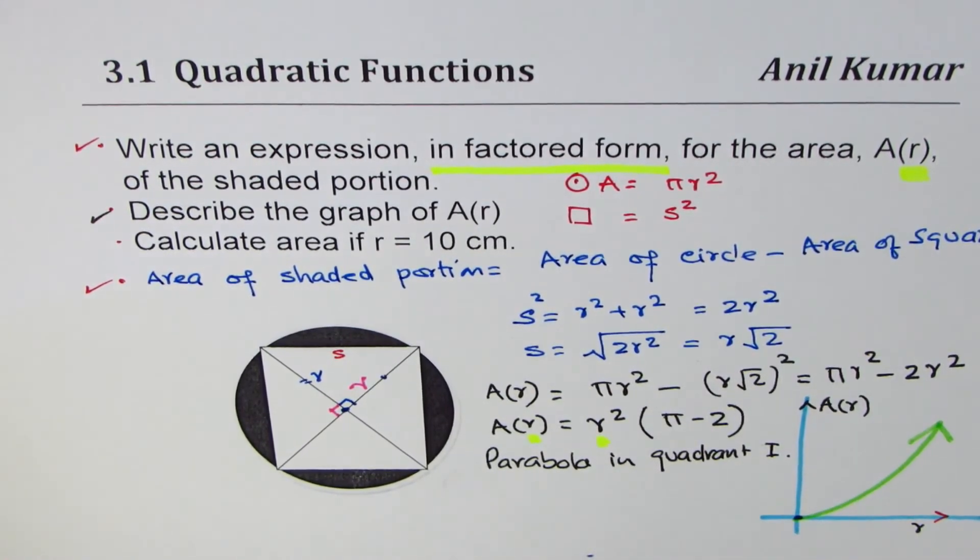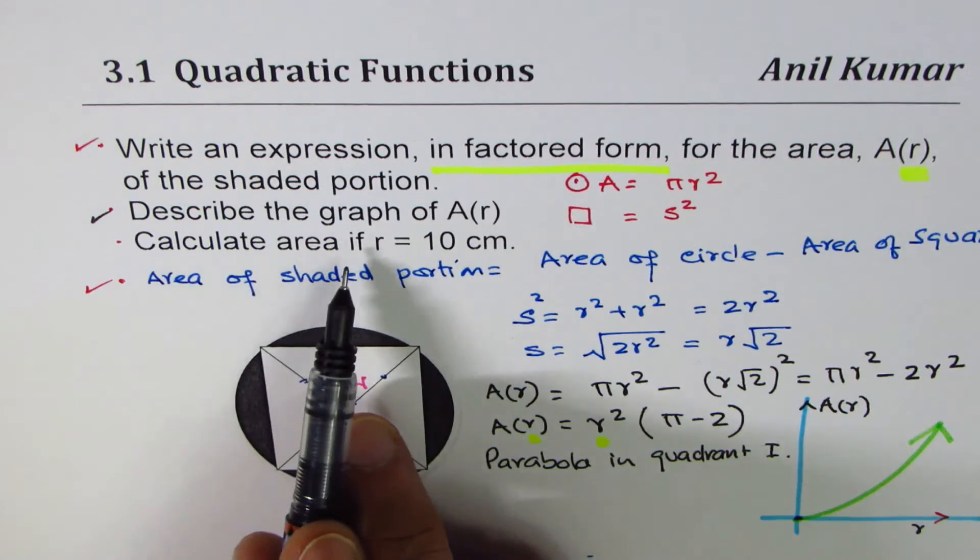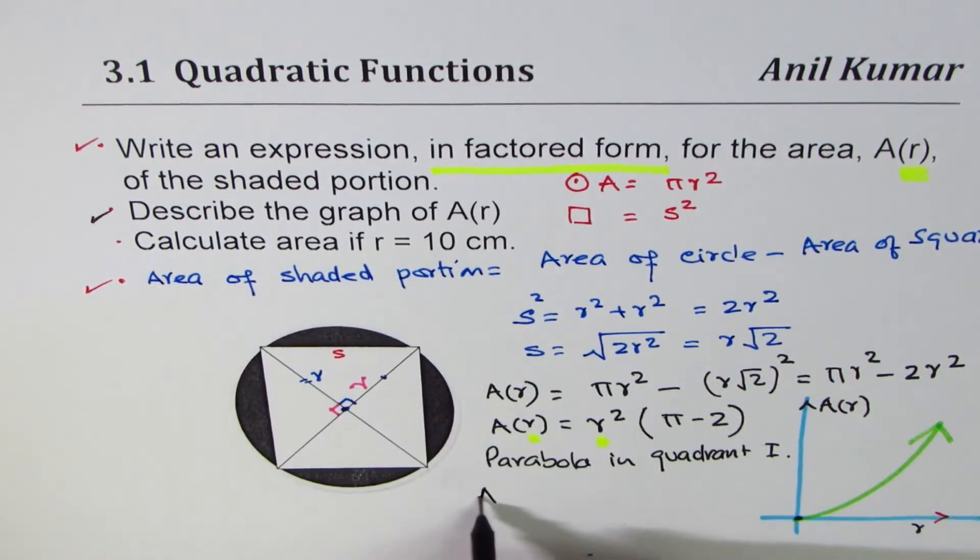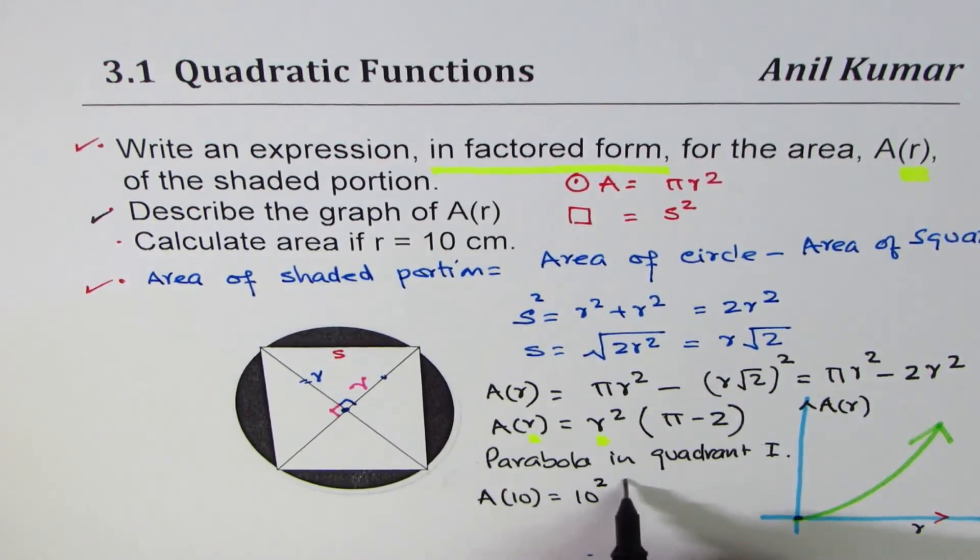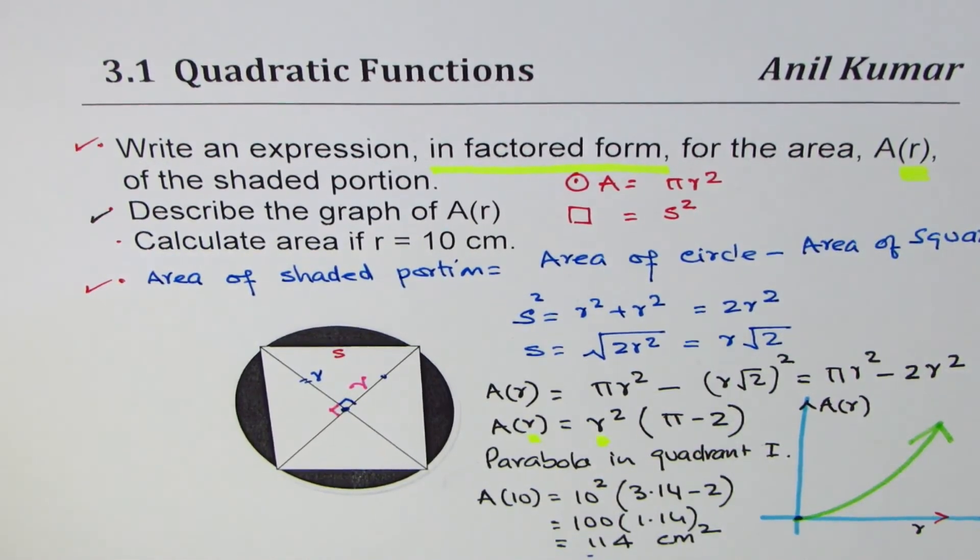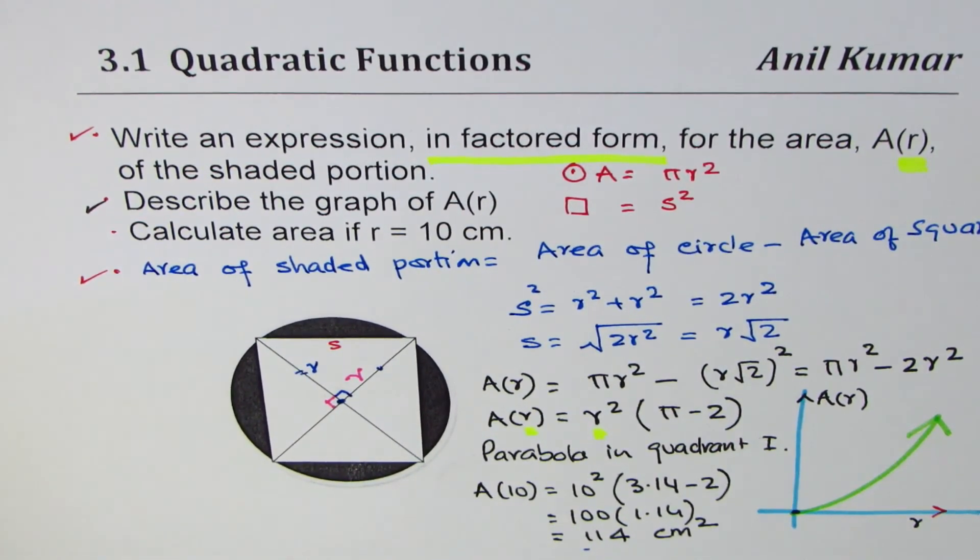The last part is calculate area when r is 10. So area when r is 10 equals 10² times - we can take a value of π as 3.14 - so 3.14 minus 2. 10² is 100, and 3.14 minus 2 becomes 1.14, so that gives you 114, and the units are centimeters squared.